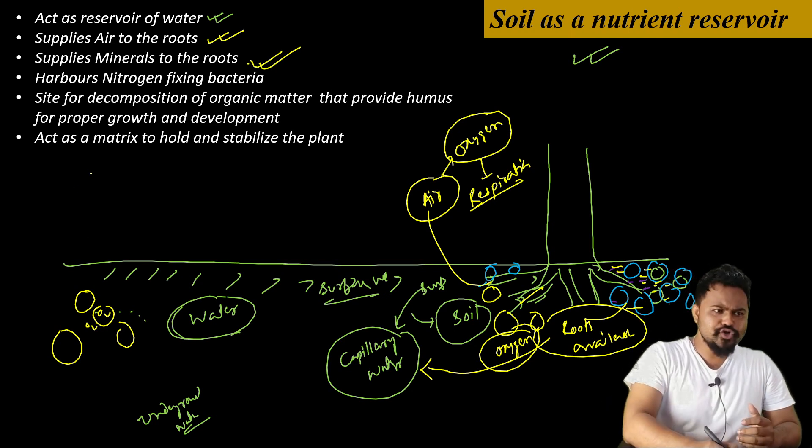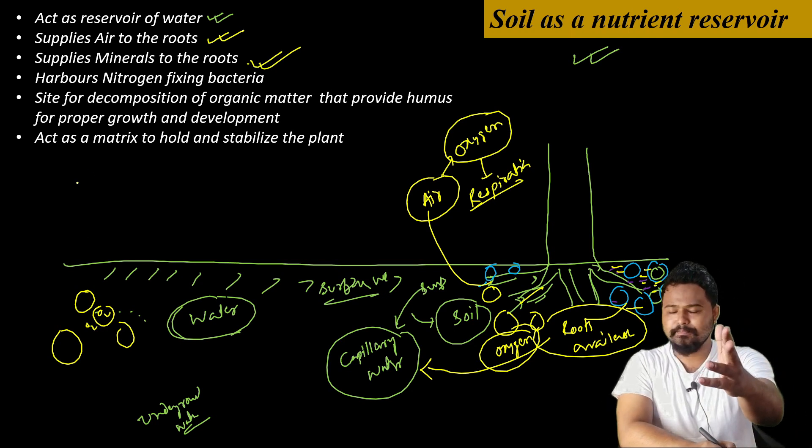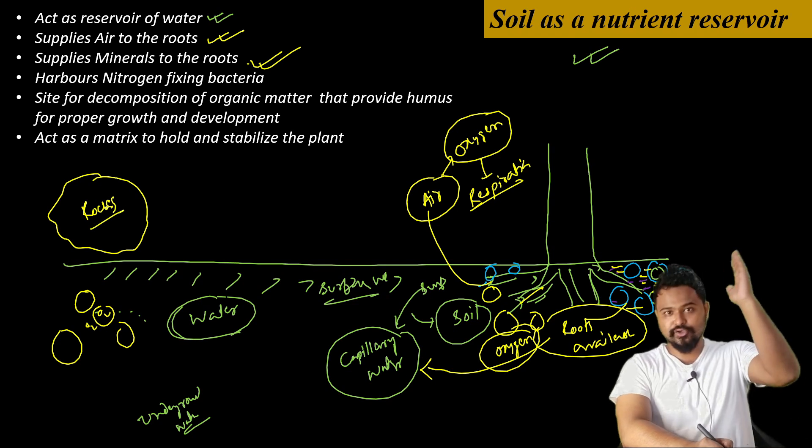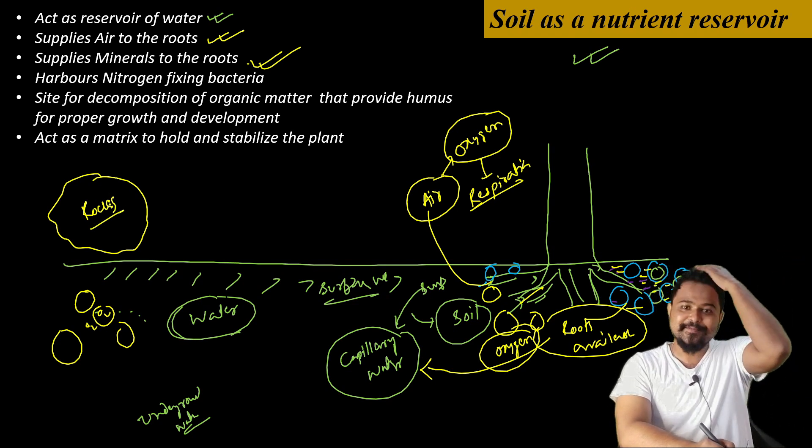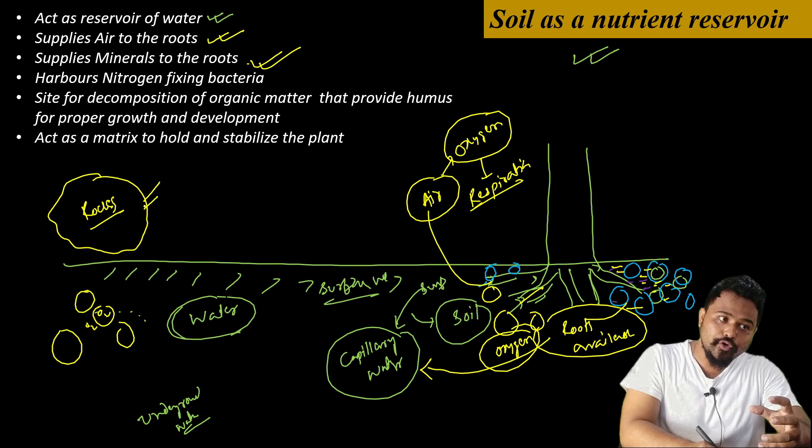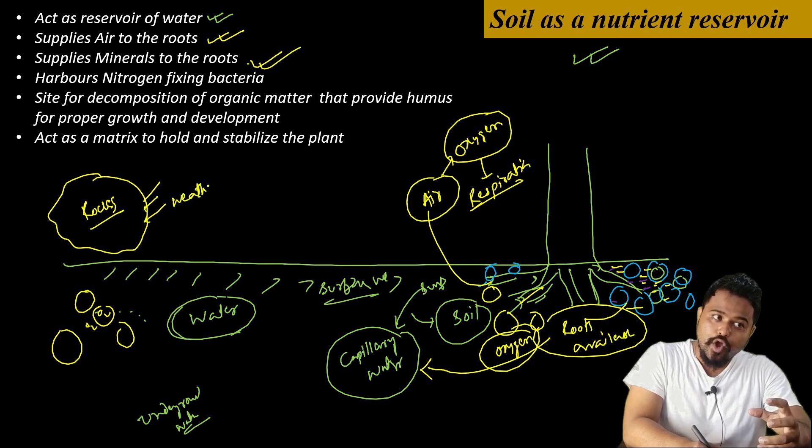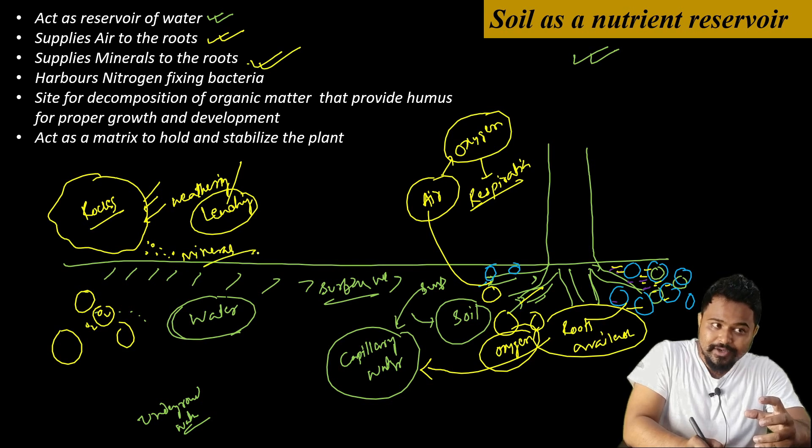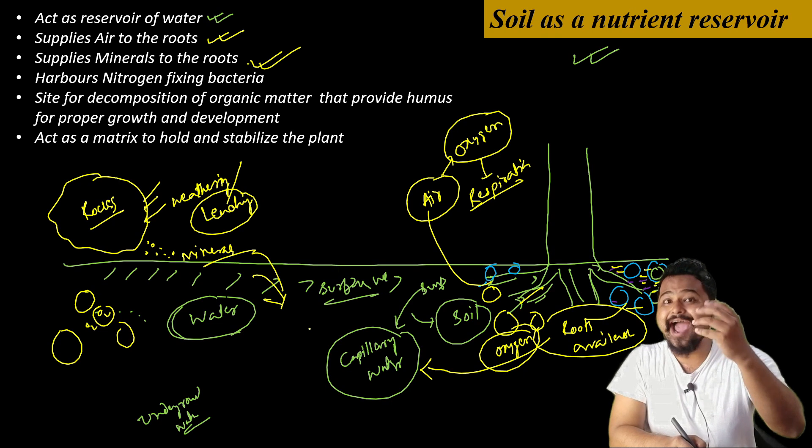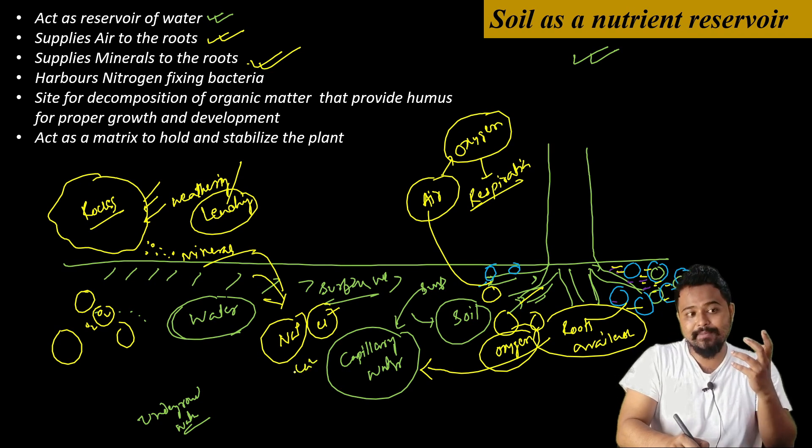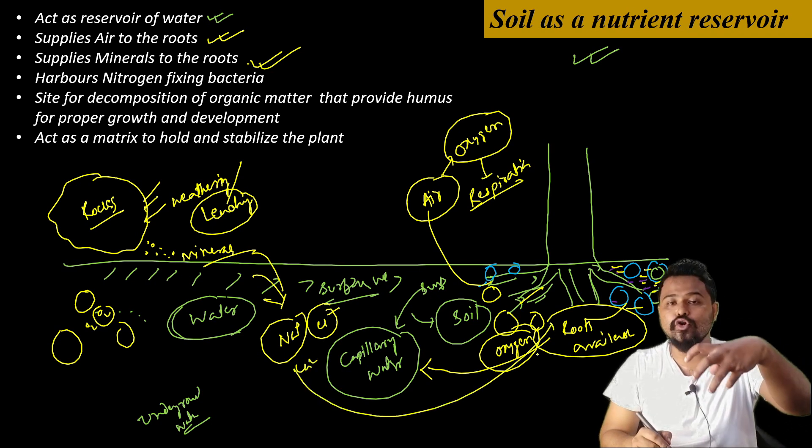It supplies minerals to the roots. Where do these minerals come from in the soil? I will explain. From mountains and rocks, through weathering and leaching processes over time, minerals are released. These minerals in the soil exist as different ions - Na positive, Cl negative, Mg 2 positive, and other ions. These ions are absorbed by the roots as minerals.